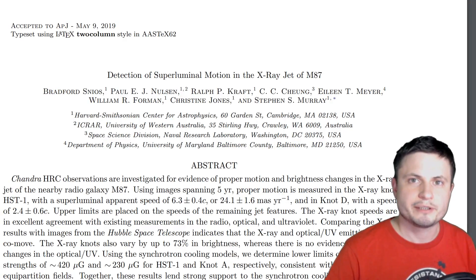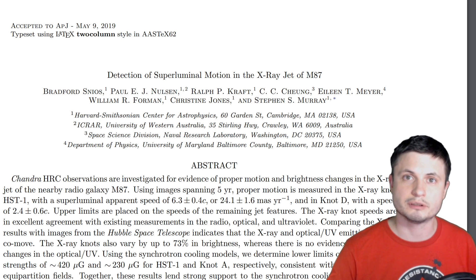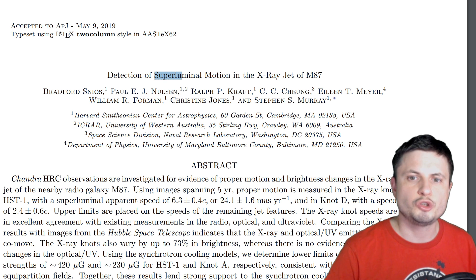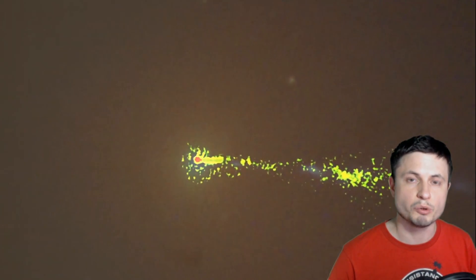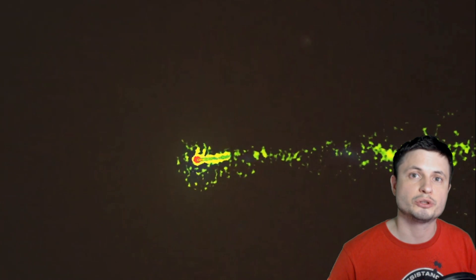So when it comes to faster than speed of light travel, we know that nothing in the universe can actually travel faster than the speed of light. Or can it? Well, the idea of superluminal motion does not necessarily violate laws of physics. Because even though nothing can physically travel faster than the speed of light, there are certain phenomena that do create faster than speed of light motion in terms of the actual appearance.